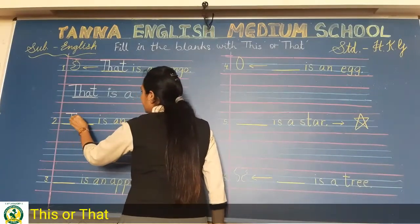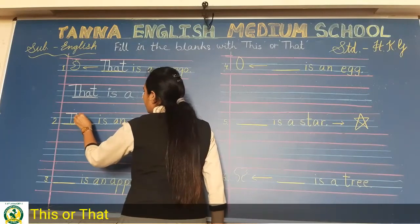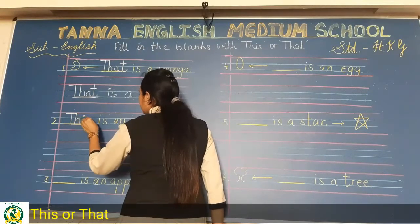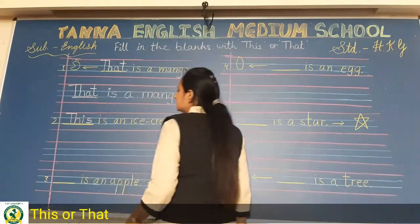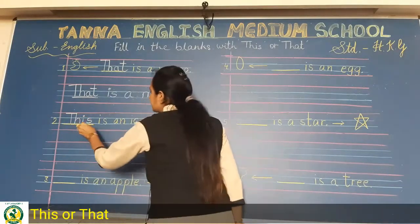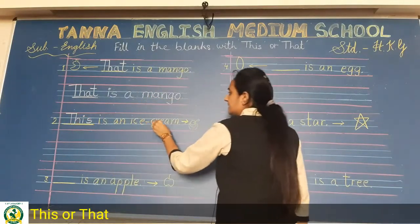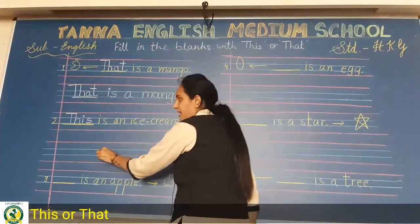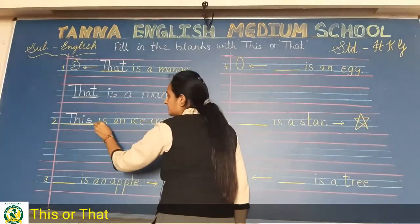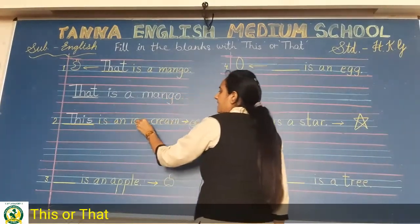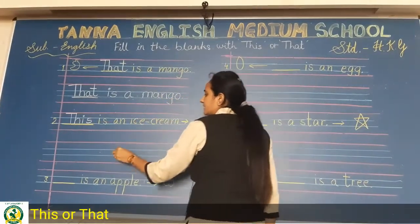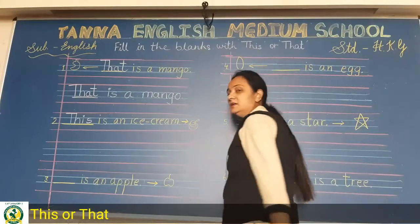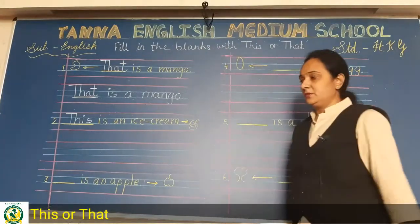And the whole sentence is: 'This is an ice cream.' You will write that on the line provided below.